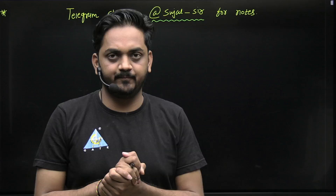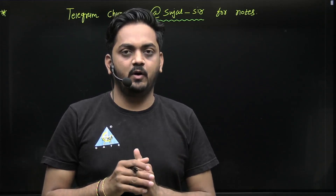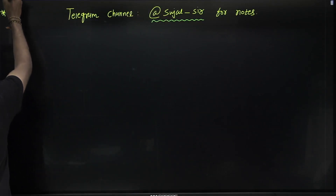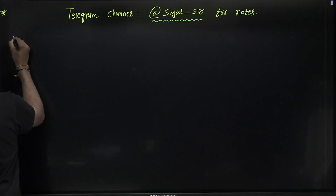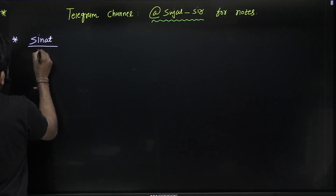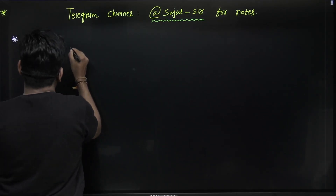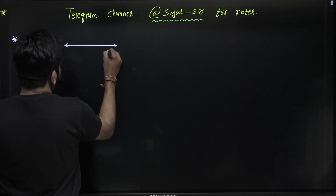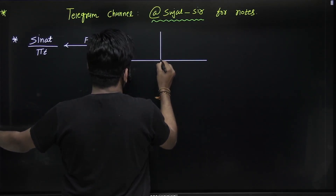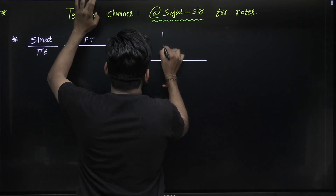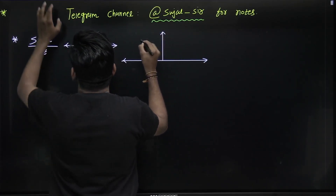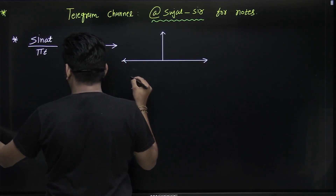Hello dear students, welcome to Gate Academy. In this video I will tell you some important information about the Fourier transform. This very important function — sine(at) upon πt — its Fourier transform is nothing but a rectangle pulse from minus a to plus a.